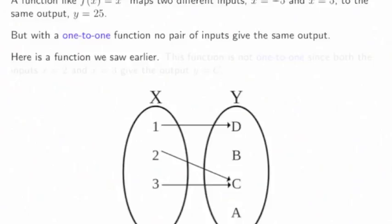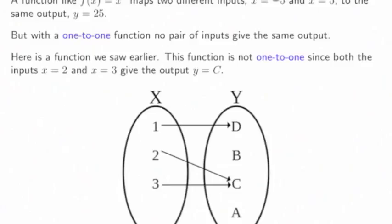Here's a function we saw earlier. This function is not one-to-one since both the inputs x = 2 and x = 3 give the same output, y = C.